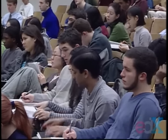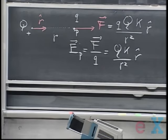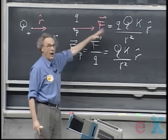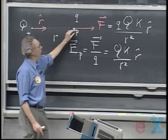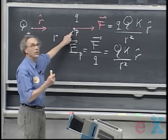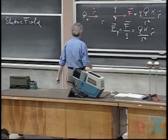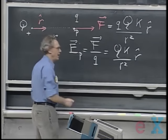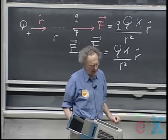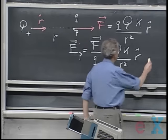The electric field is also a vector. By convention, we choose the force such that if this is a positive test charge, the E field is away from Q if Q is positive. If Q is negative, the force is in the other direction and therefore E is in the other direction. We adopt the convention that the E field is always in the direction that the force is on a positive test charge. The unit for electric field is Newtons divided by Coulombs in SI units.